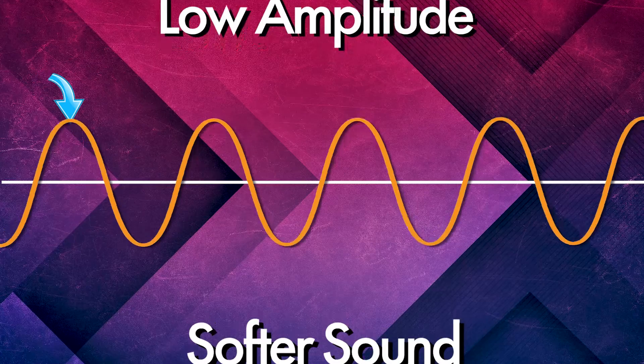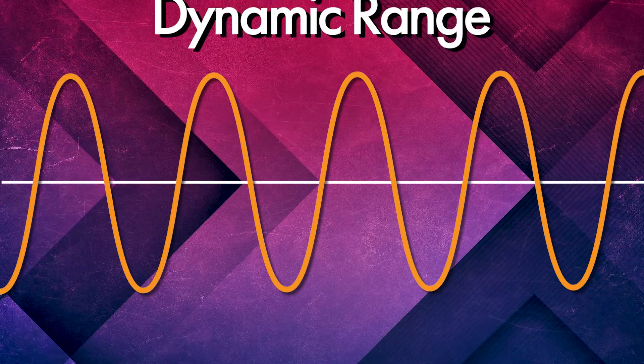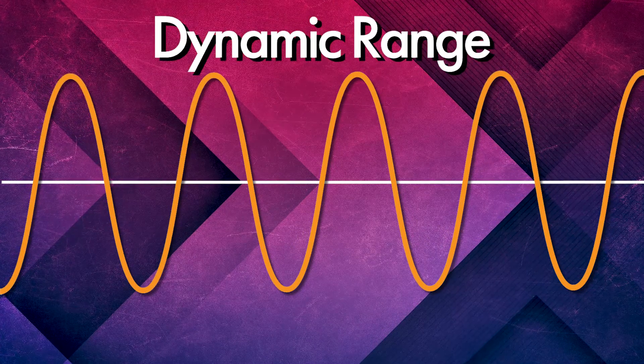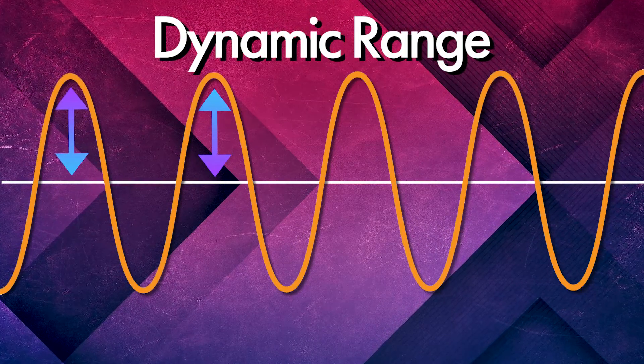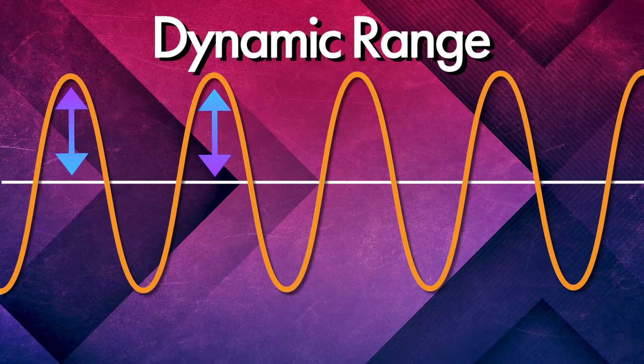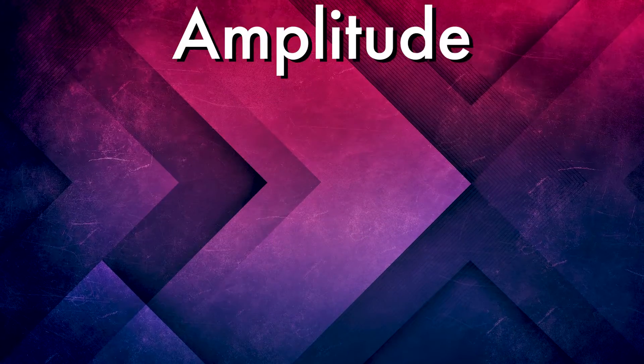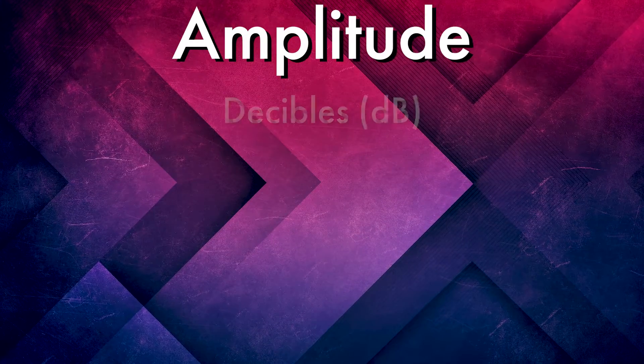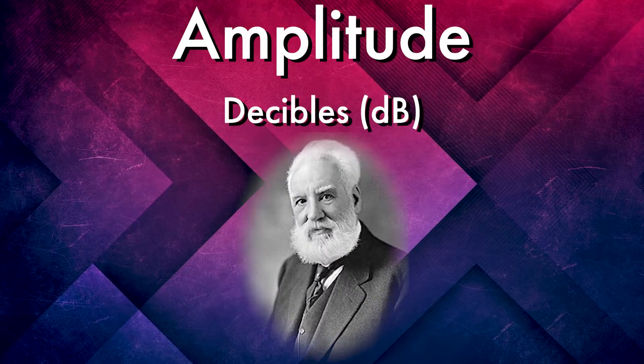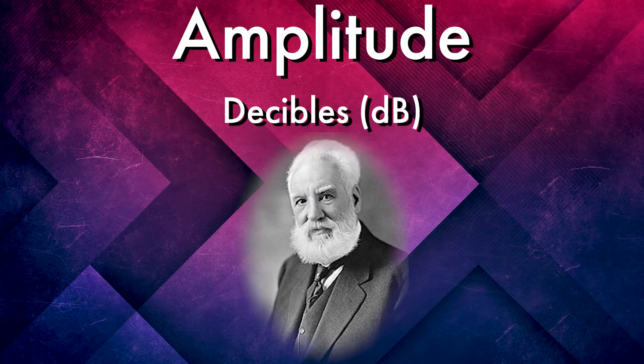Similar to musical terminology, dynamic range is the difference between the loudest and quietest parts of a sound wave. We'll talk more about dynamic range when we get to microphones. Amplitude is measured in decibels, named after Alexander Graham Bell. The decibel is a very versatile measurement and is treated somewhat differently in the variety of fields it's applied in.